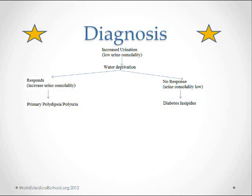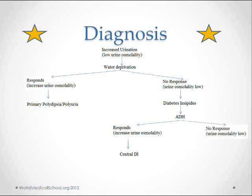Now, in order to differentiate between central versus nephrogenic, you would give them antidiuretic hormone. If the kidney responds by increasing urine osmolarity, it means there was a deficiency of ADH, so the diagnosis is central diabetes insipidus. And if the kidney does not respond and the urine osmolarity is low, the diagnosis is nephrogenic diabetes insipidus.